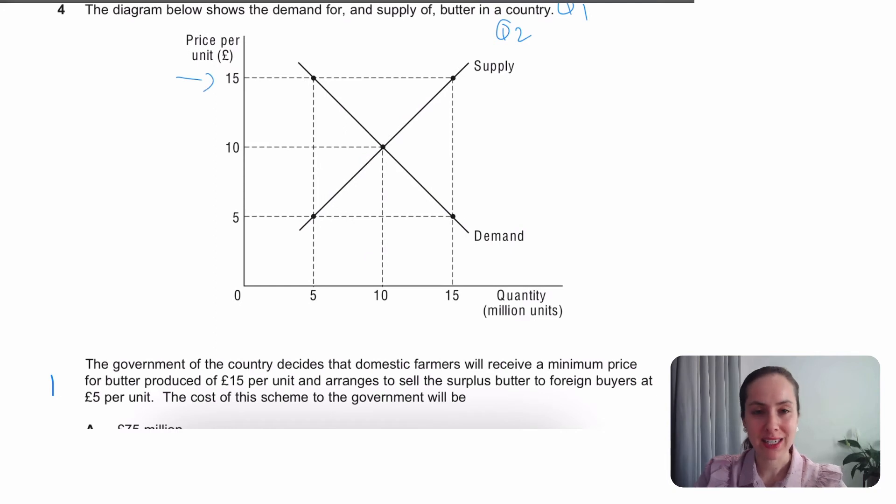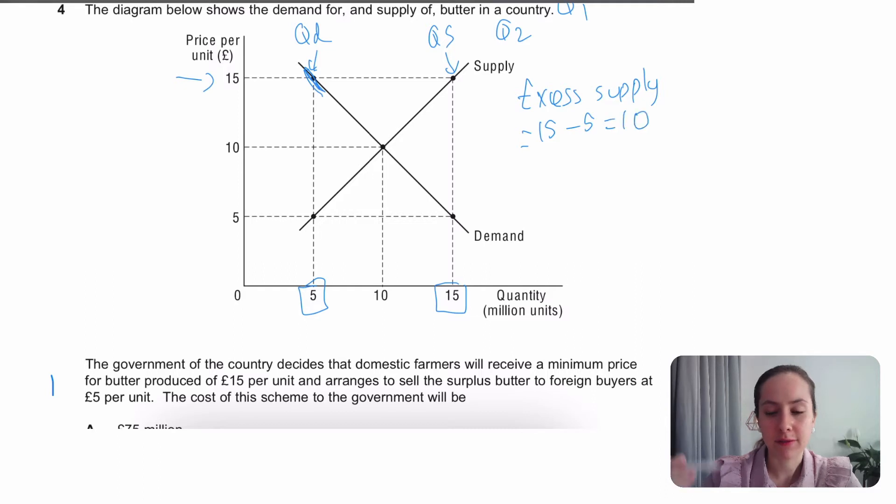Here we have, again, this could be extension activities for some of you, but here we have a government buying butter trying to maintain this price of 15. So what happens? If the government tries to set a price of 15, the demand at price 15 is here. It's specifically 5 units of butter. And the supply is all the way here, QS, which is 15 units of butter. The problem is if they want to maintain a price of 15, they have excess supply. They have an excess supply because the supply is 15 and the demand is 5. So there's excess supply of 10.